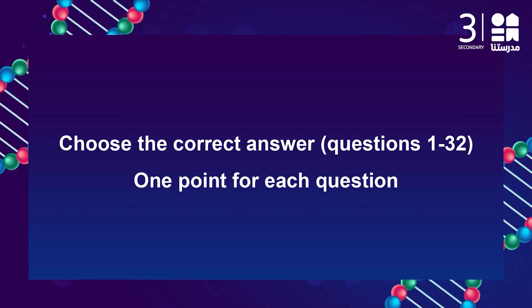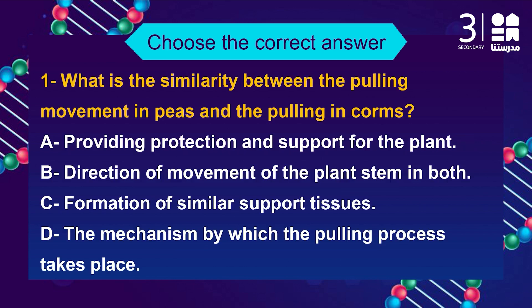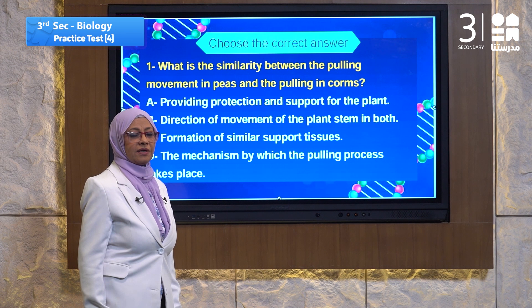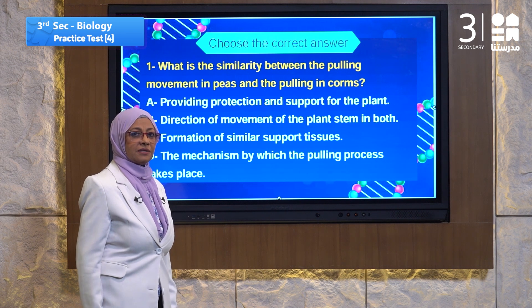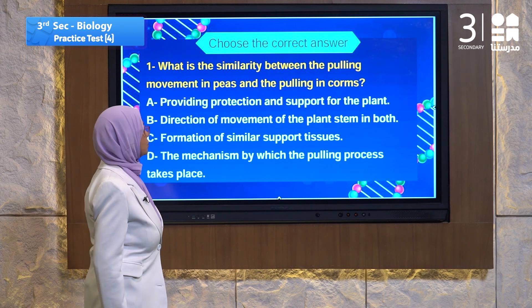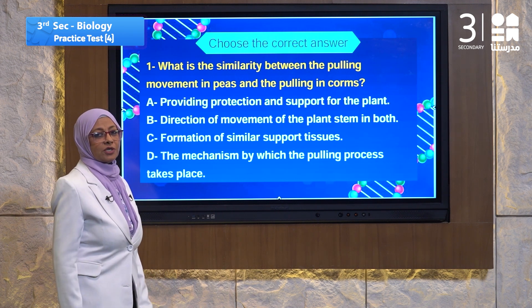Choose the correct answer from questions 1 to 32 with one mark only. Question number one speaks about the similarity between the pulling movement in bulbs above the ground and the pulling in corms under the ground. Let's go to see what the choices are.